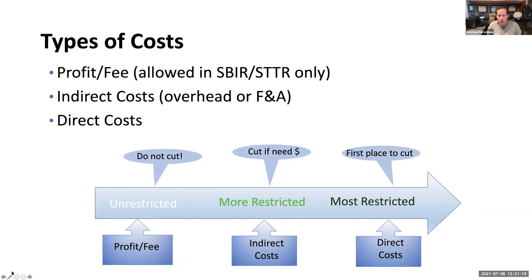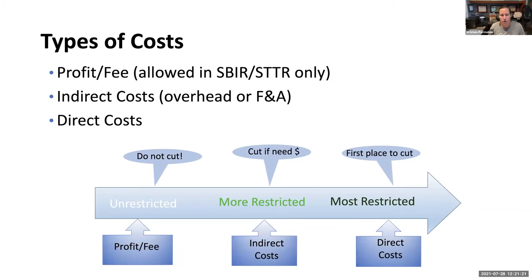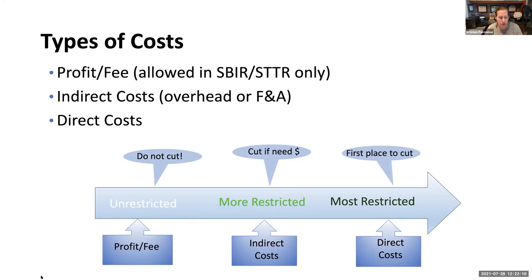Let's talk about the three different types of costs in your SBIR budget. The first is the profit or fee. If you're applying for another NIH mechanism like an R01 or R21, this line does not apply to you — you are not allowed to take a fee or profit. This is strictly reserved for the SBIR program. The second type of costs are indirect costs, sometimes called overhead or F&A. And then finally, direct costs. Those costs move across a continuum of levels of restrictions — the fee or profit is completely unrestricted, indirect costs are slightly more restricted, and direct costs are very restricted.